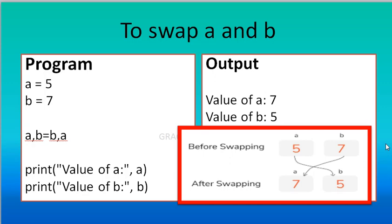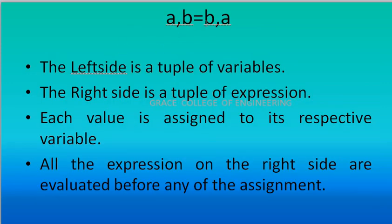This concept can only be used in Python. In C, C++, or any other language, if you want to do this swapping program, you must use the temporary variable. But in Python you can easily do this program — Python is very interesting and easy to write. In the expression A comma B equal to B comma A, the left side is a tuple of variables, the right side is a tuple of expressions. Each value is assigned to its respective variable, and all expressions on the right side are evaluated before any of the assignments.